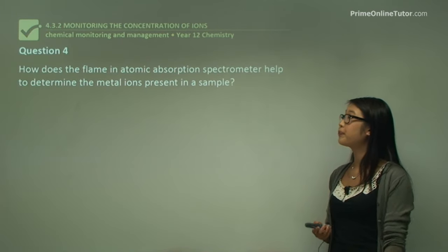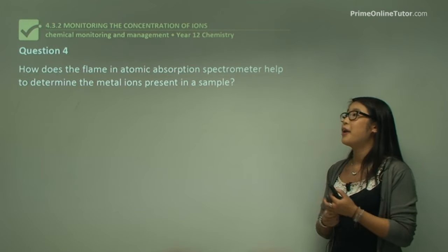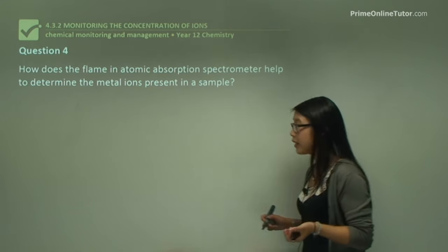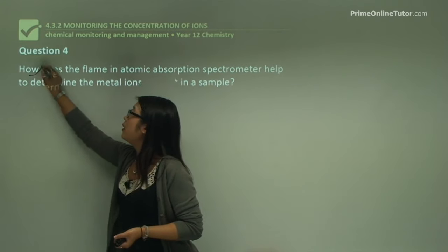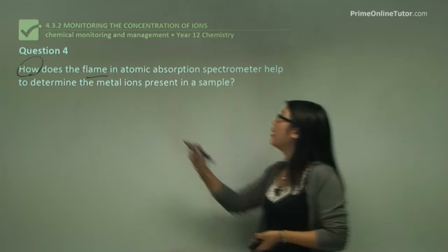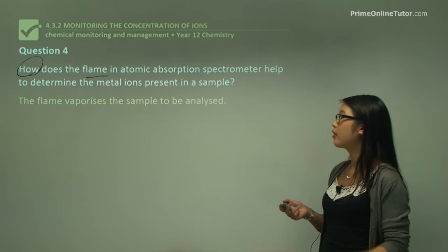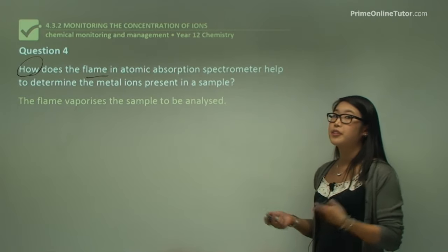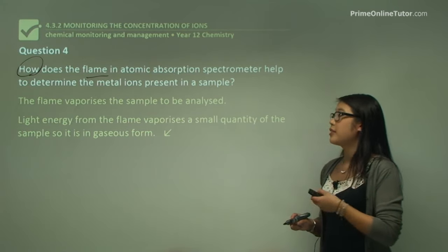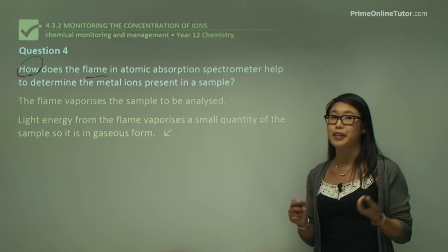Question four: how does the flame in an atomic absorption spectrometer help to determine metal ions present in a sample? The flame vaporizes the sample so that light can pass through it. Light energy from the flame vaporizes a small portion of the sample into a gaseous state, so then light can pass through and atoms can absorb the light.